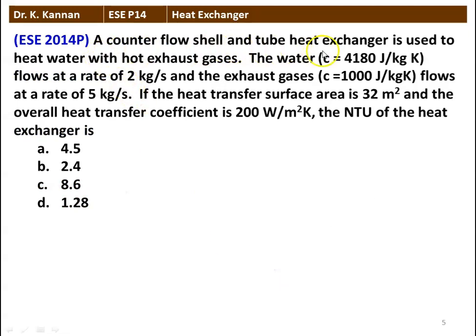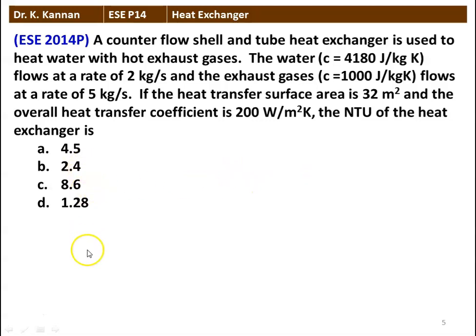Next question: a counter flow shell and tube heat exchanger is used to heat water with hot gases. The water of specific heat 4180 J/kg·K flows at a rate of 2 kg/s, and the exhaust gases of specific heat 1000 J/kg·K flow at a rate of 5 kg/s. If the heat transfer surface area is 32 m² and the overall heat transfer coefficient is 200 W/m²·K, the NTU of the heat exchanger is: 4.5, 2.4, 8.6, or 1.28. The correct answer is 1.28.